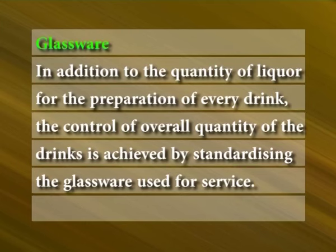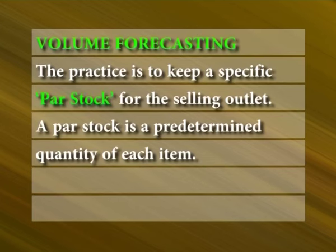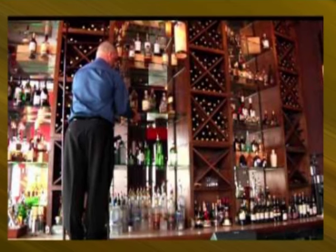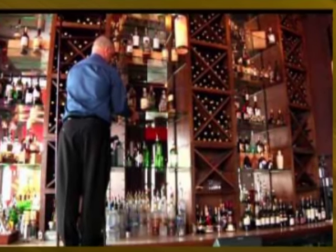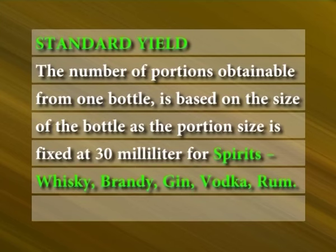Appropriate glassware for the service of different types of drinks should be available. Volume forecasting: The practice is to keep a specific par stock for the selling outlet. A par stock is a predetermined quantity of each item — a calculated quantity based on the sales requirement for an average day. Each day, the stock consumed is replenished from the cellar such that the par stock is brought to the required level and the bar is stocked for the day's sale.